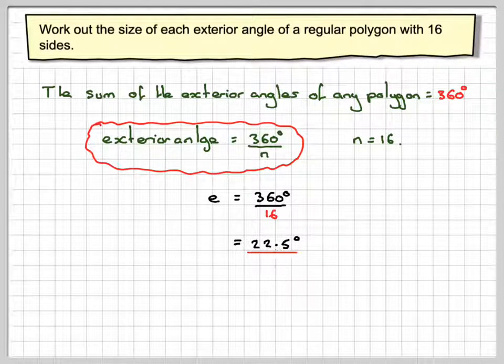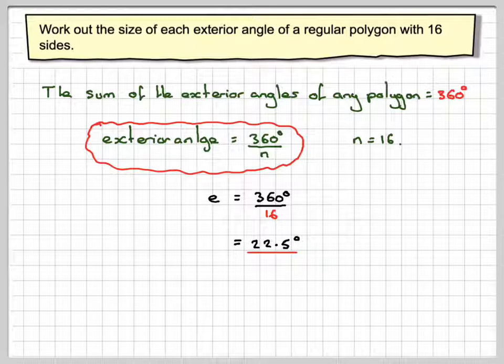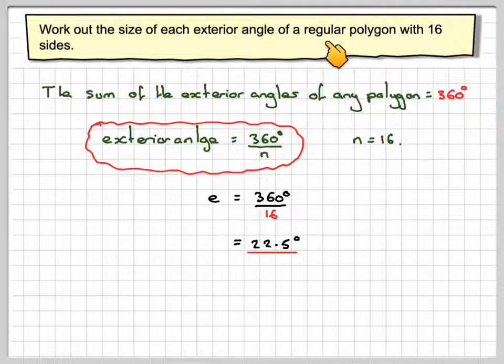Note from that, we could actually find the size of an interior angle by subtracting this number from 180. This only works, though, if the polygon is regular, but this part here is true for any polygon.